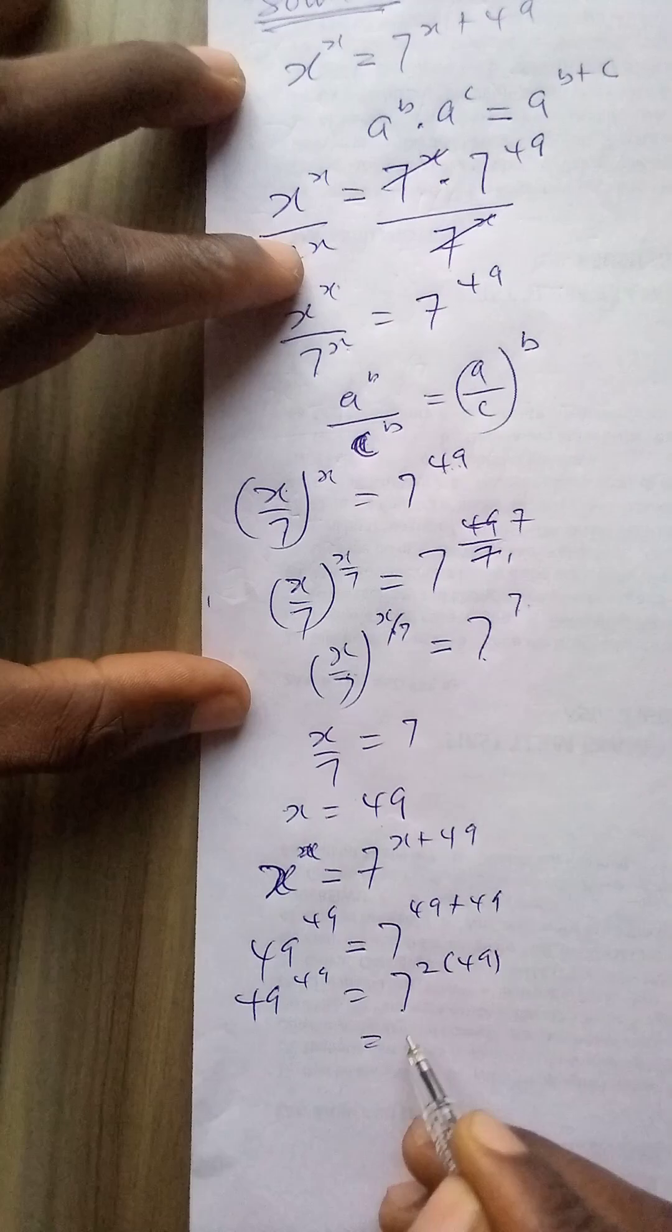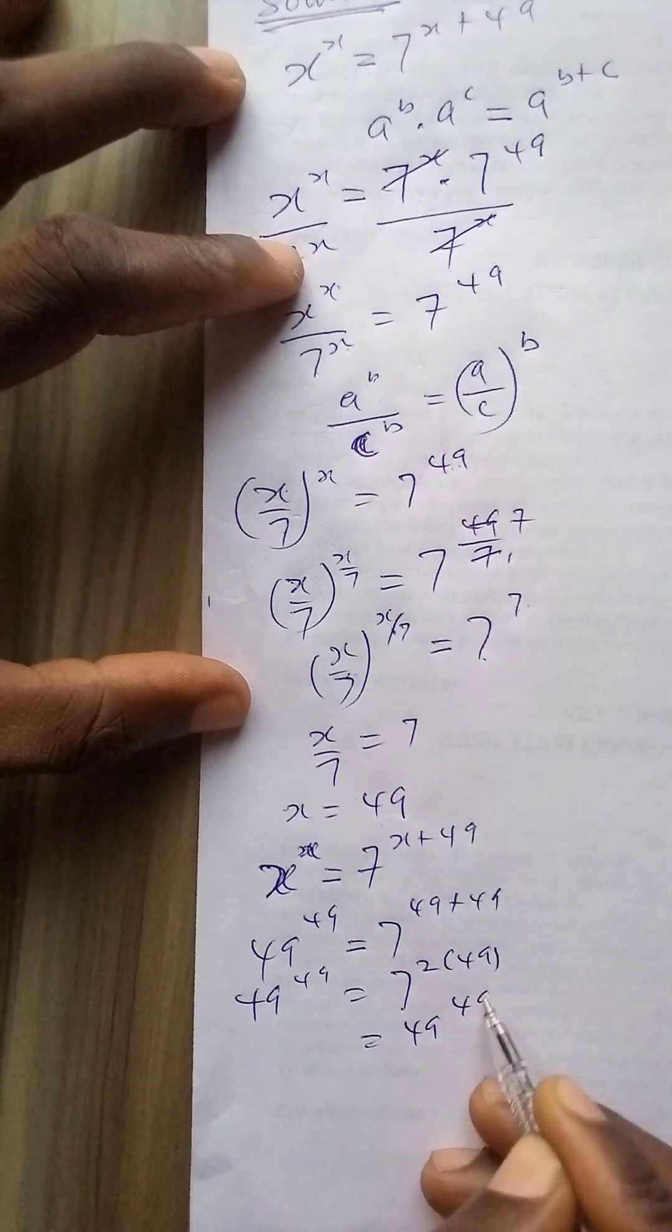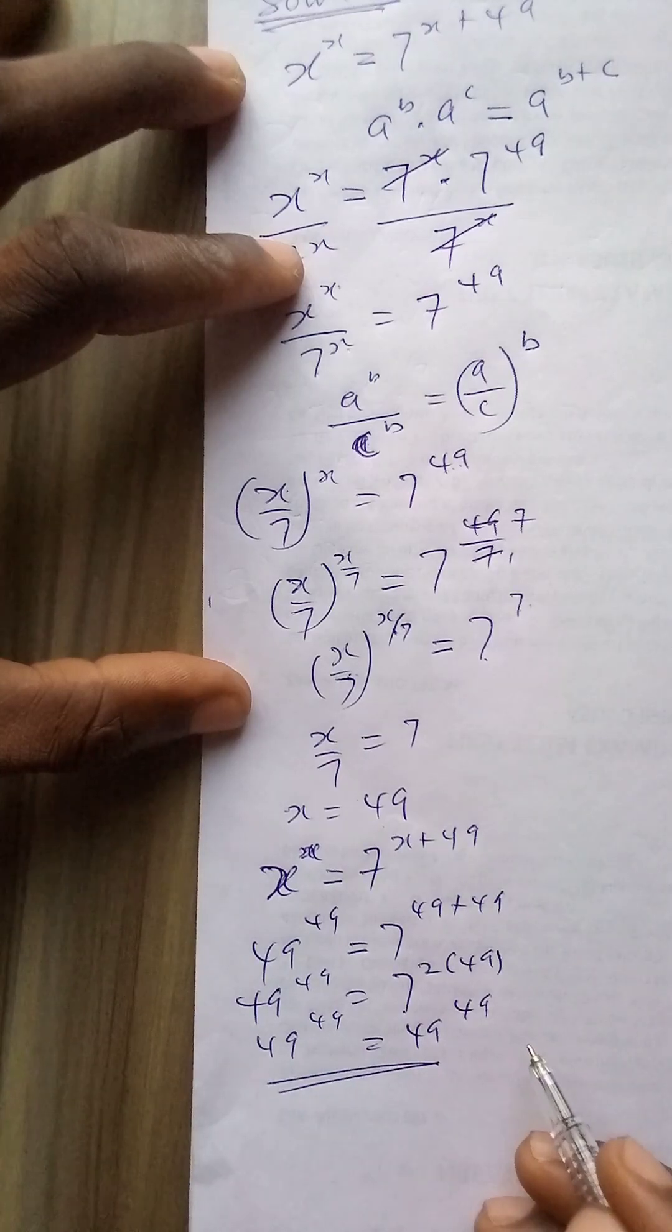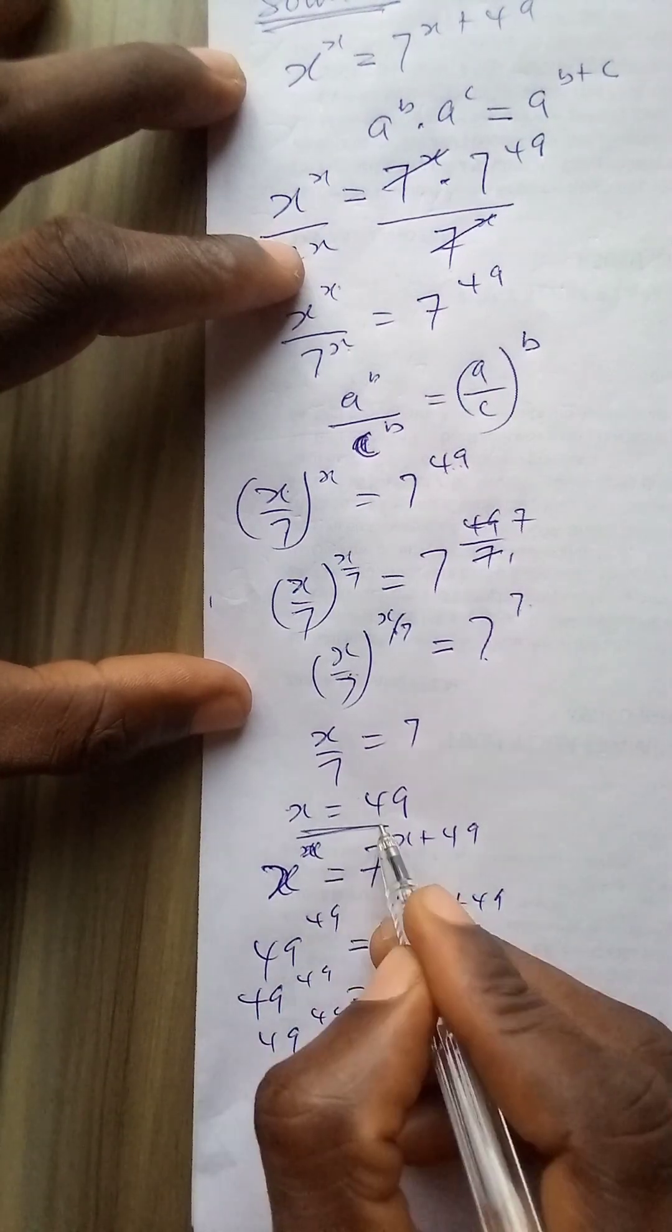7 to power 2 is 49. 49 to power 49 equals 49 to power 49. I have a balanced equation. Therefore x equals 49.